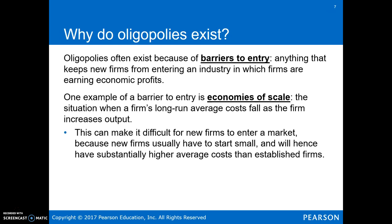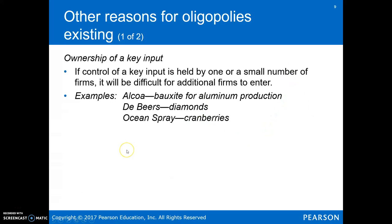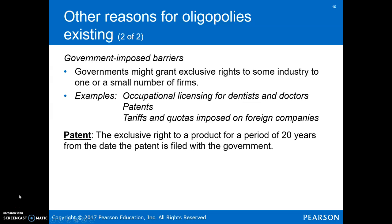With economies of scale, in a competitive market firms reach the lowest point on the long-run average cost curve at a smaller output, allowing many firms. In oligopoly, the long-run average cost continues to decline until we get to a larger quantity, allowing just a few firms to exist. Other barriers include ownership of a key input, just like in monopoly. Also, government-granted exclusive rights can give rise to barriers to entry leading to an oligopoly — with monopoly it's an exclusive right to one firm, but with oligopoly it's given to a small number of firms. A key example here would be licensing for dentists and doctors.